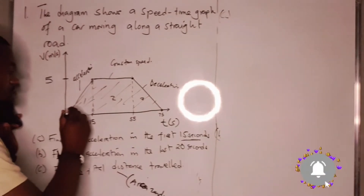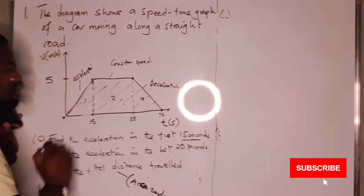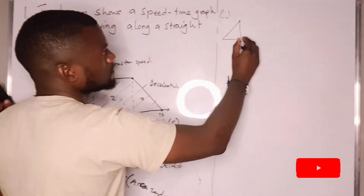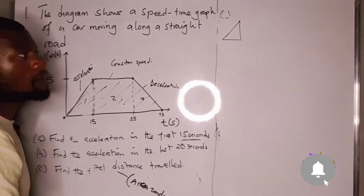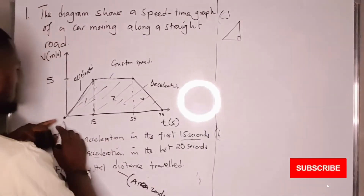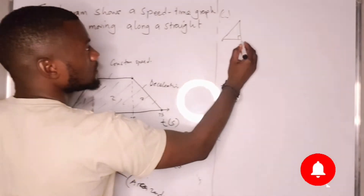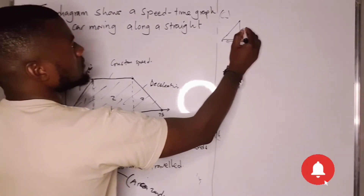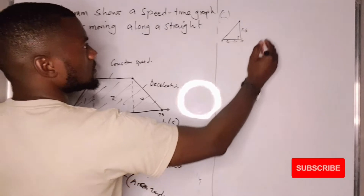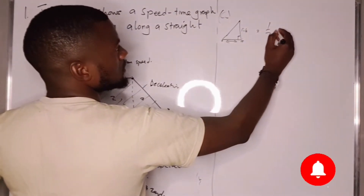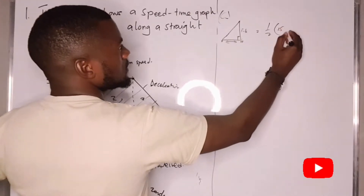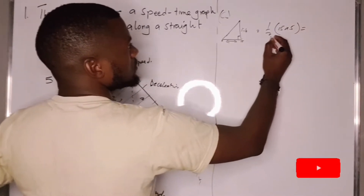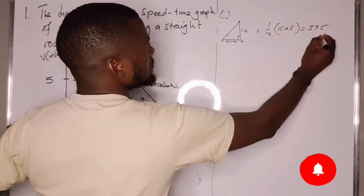The first part forms a right-angled triangle. From here to here, the base is 15 seconds and the height is 5 meters per second. So the area is half times 15 times 5, which gives us 37.5.